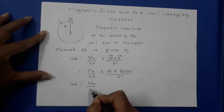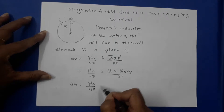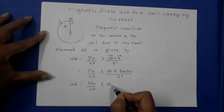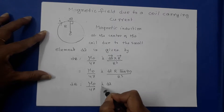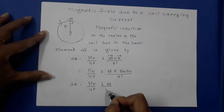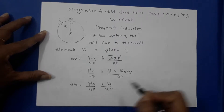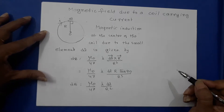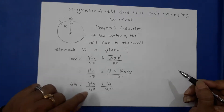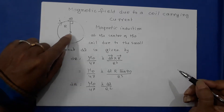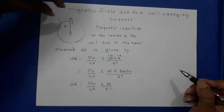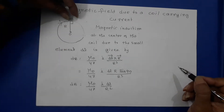Since sin90° = 1, DB equals μ₀/4π · I · DL / R². This is the magnetic induction at the center of the coil due to this small element.